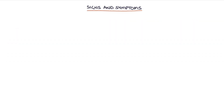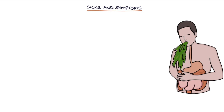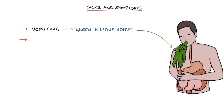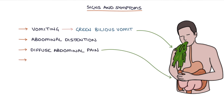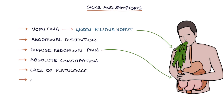The signs and symptoms of Ileus are similar to large bowel obstruction with vomiting, particularly green bilious vomiting, abdominal distension, diffuse abdominal pain, absolute constipation, a lack of flatulence, and absent bowel sounds — as opposed to the tinkling bowel sounds that you hear in mechanical obstruction.